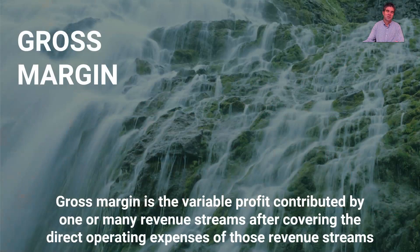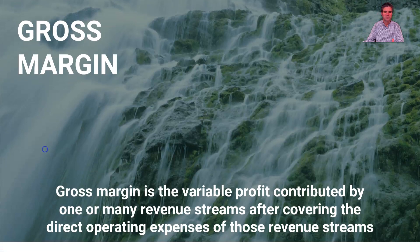First, we'll define gross margin. Gross margin is the variable profit contributed by one or many revenue streams after covering the direct operating expenses of those revenue streams, and we'll talk about this in a little more detail.